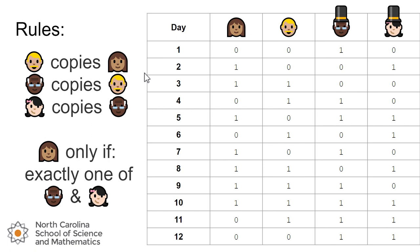We can see this shifting of bits happening from left to right. On day one in the leftmost column we had a zero, then on day two in the column to the right there's a zero, and a column to the right on day three was a zero, and so on. That's where the shifting part of the linear feedback shift register comes in — these bits shift from left to right. That makes sense given the rules: everybody copies the person on their left, so a decision made on the far left shifts down the timeline to future people to the right.